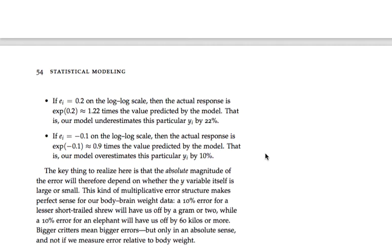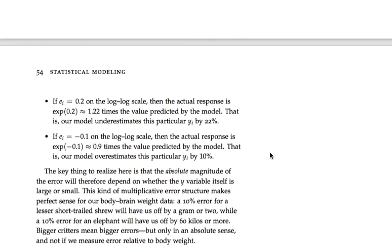And so the key thing to realize here is that the absolute magnitude of the error that you're making depends on how big the y variable itself is. And that's exactly the kind of error structure that makes sense for the body weight, brain weight data. It's an error in percentage terms that we want to be keeping track of. If you make a 10% error for the smallest animal in the data set, the shrew, you know, we'll be off by one gram. If you make a 10% error for the African elephant, you'll be off by 60 kilograms. So the simple mantra here is bigger critters mean bigger errors, but those are bigger errors only in an absolute sense. And what this is telling you in a power law, the way we're measuring error is not in an absolute sense. We're measuring error in percentage terms, exponentiated residuals, relative to the original body weight.